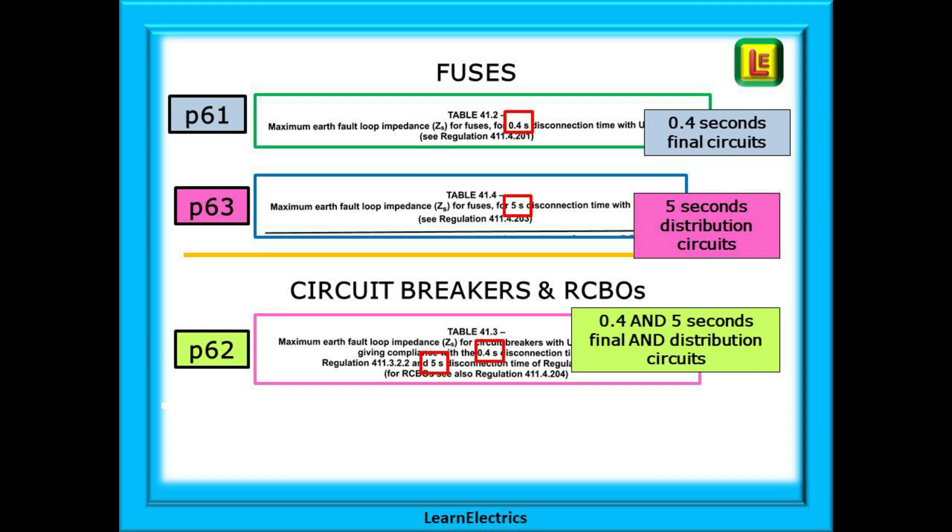The tables on page 61 and page 63 are to do with fuses. Page 61 is for fuses in final circuits with tripping times of 0.4 seconds or less. Page 63 is for fuses in distribution circuits with tripping times of 5 seconds or less. For fuses we use a different table for different tripping times.